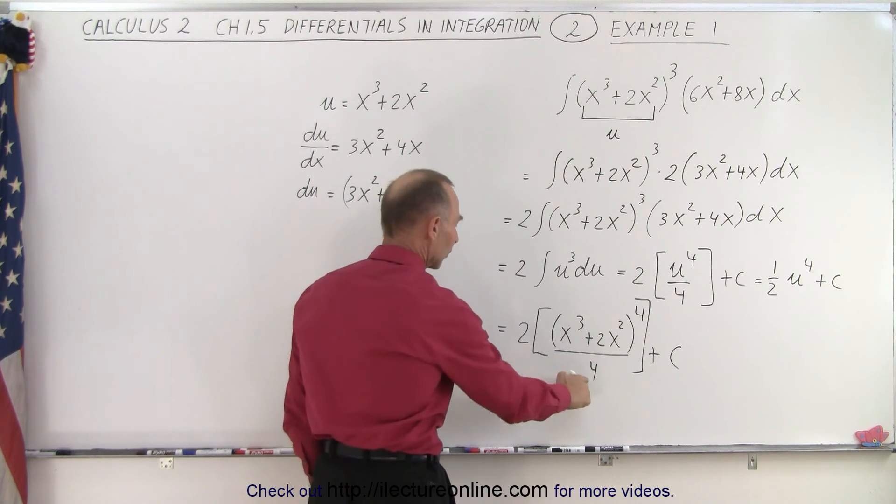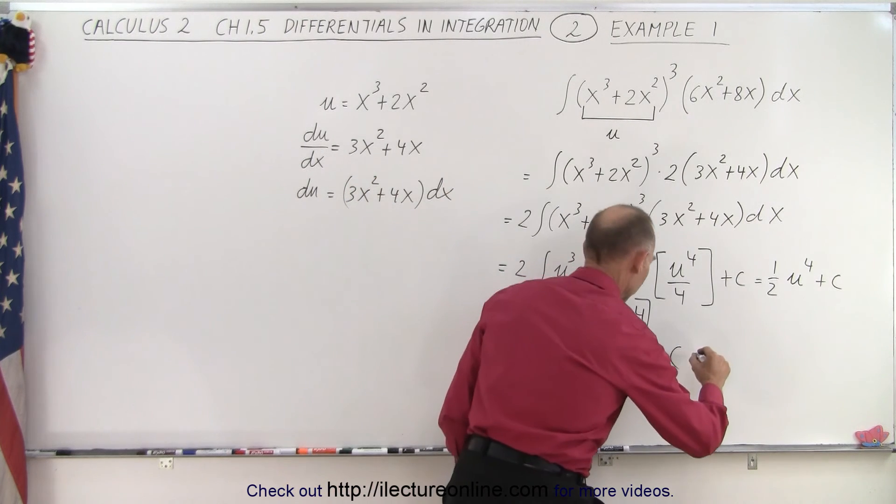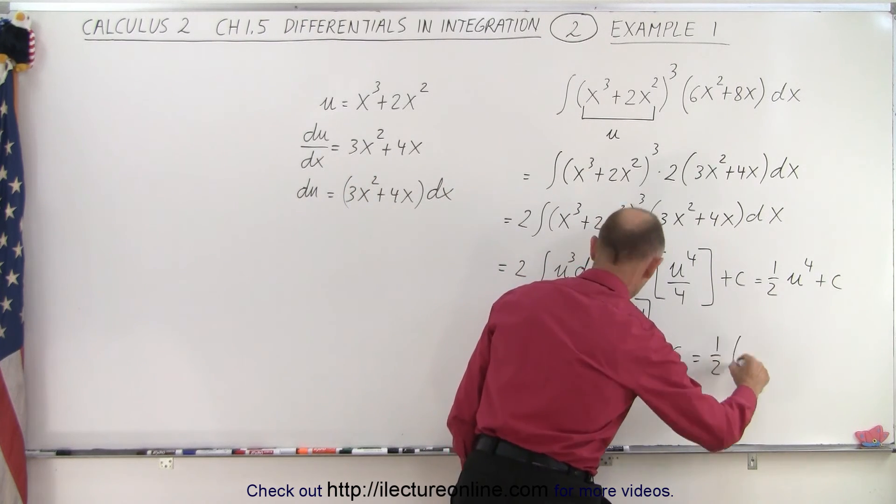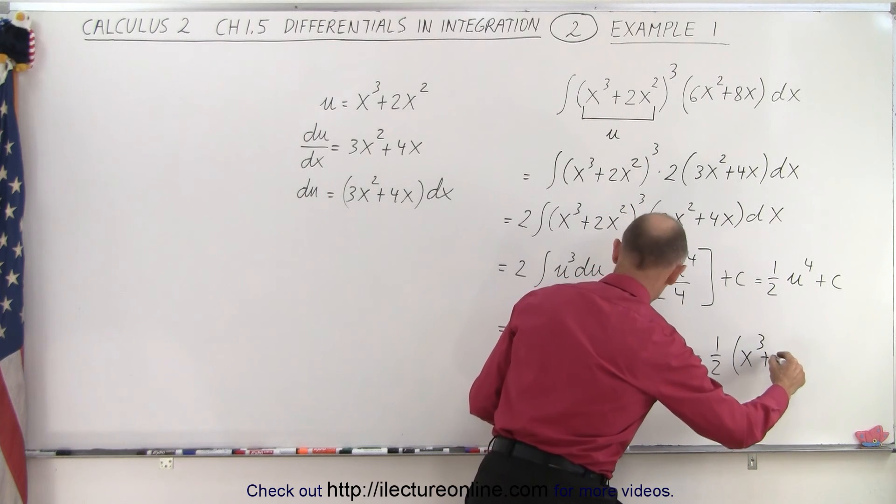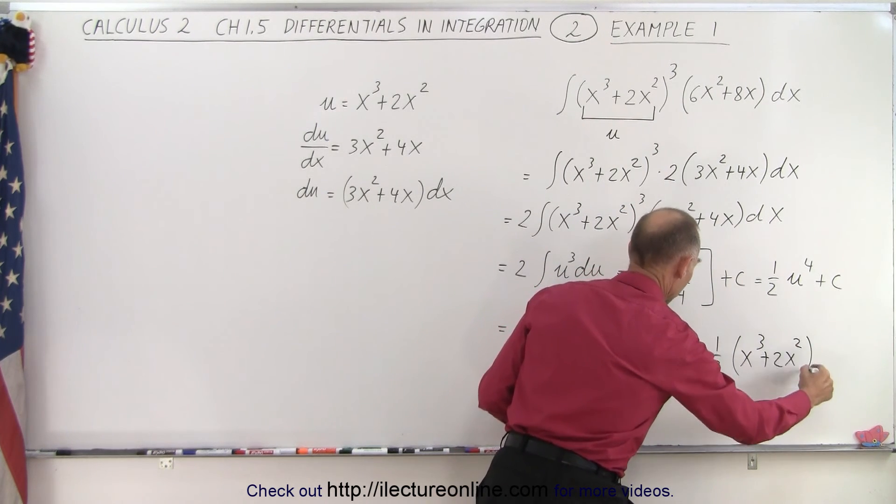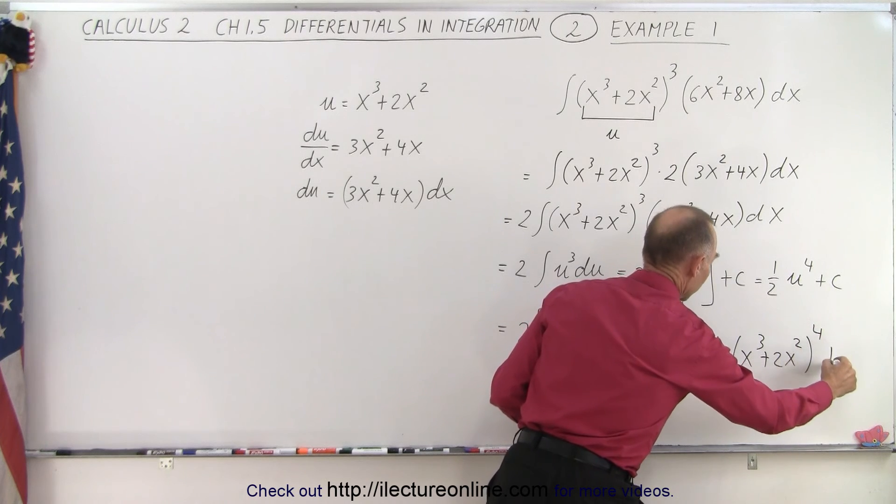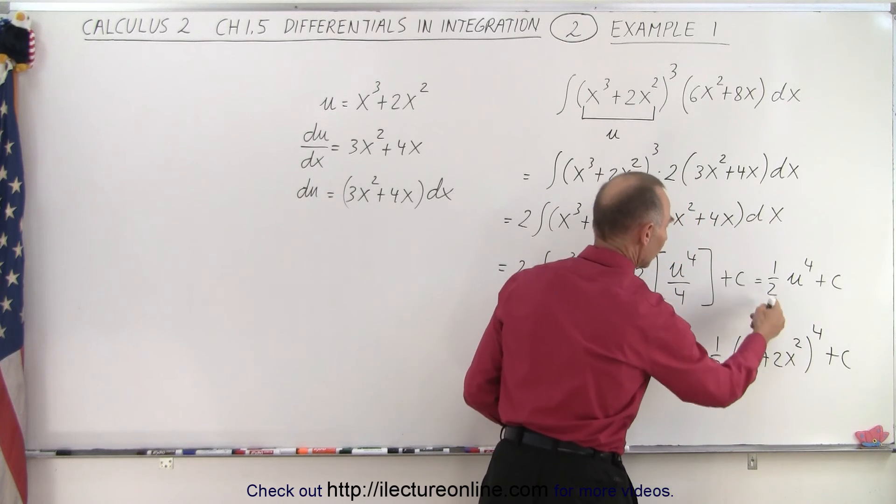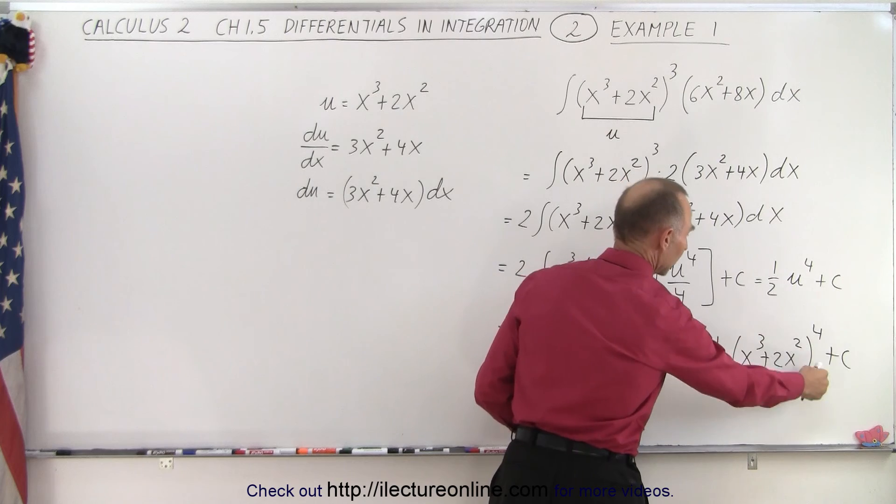And then of course the 2 and the 4, they cancel out. And so this is equal to 1/2 times the quantity (x³ + 2x²) to the fourth power plus a constant of integration, which essentially is 1/2 u⁴ plus c.